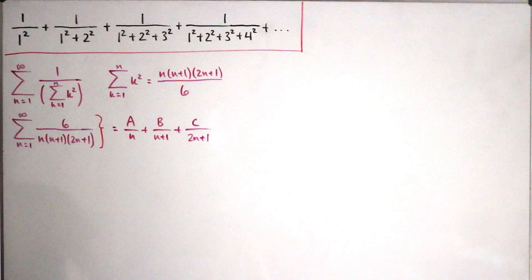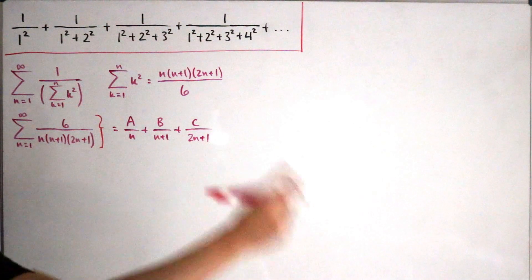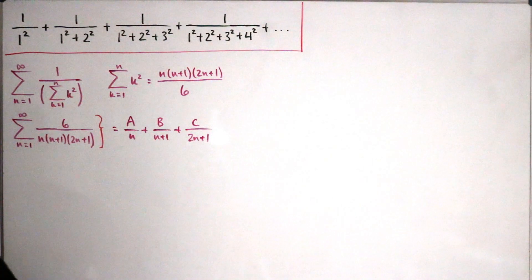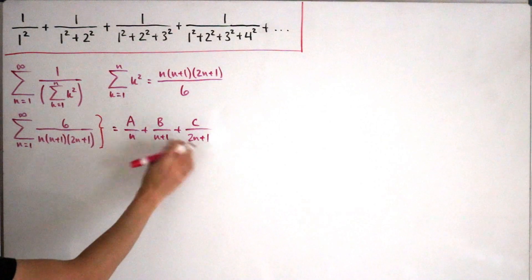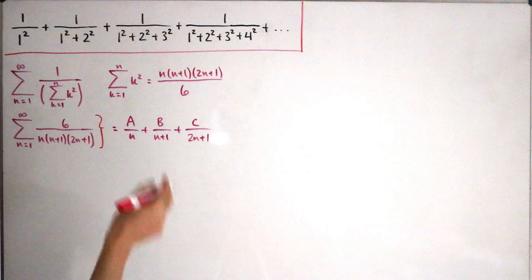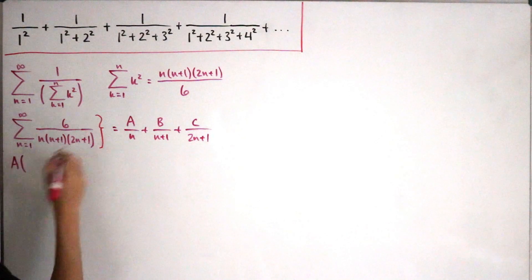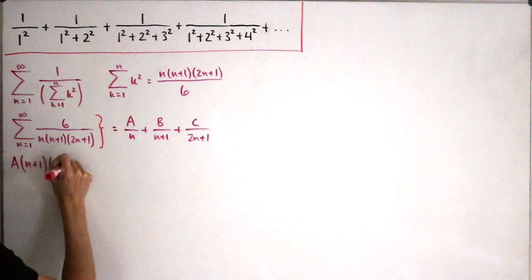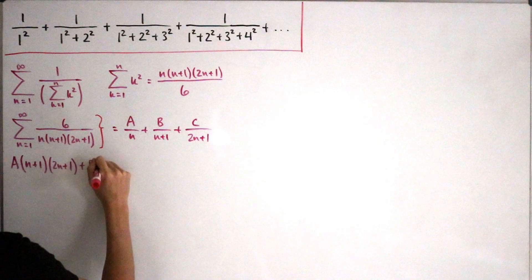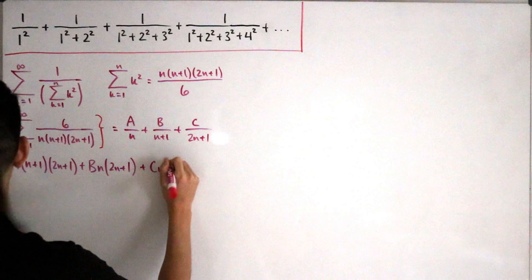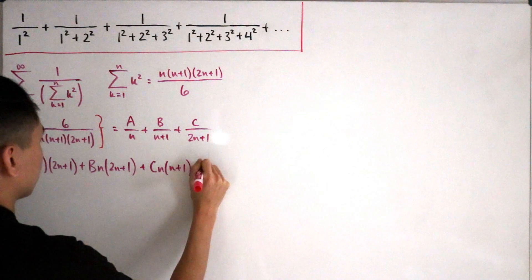From here we use the butterfly method — cross-multiply so everything has a common denominator. We get: A(n+1)(2n+1) + B·n(2n+1) + C·n(n+1) = 6.